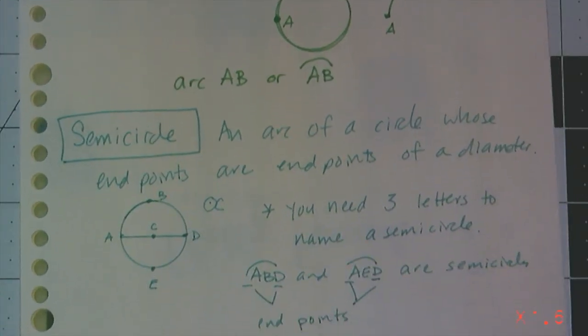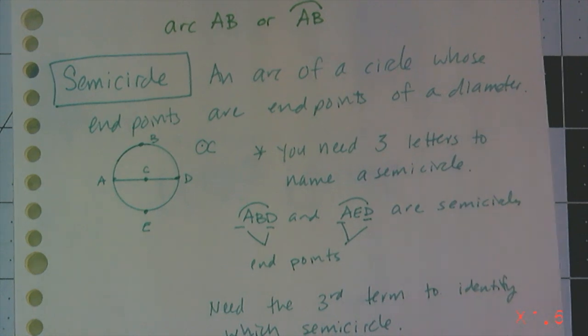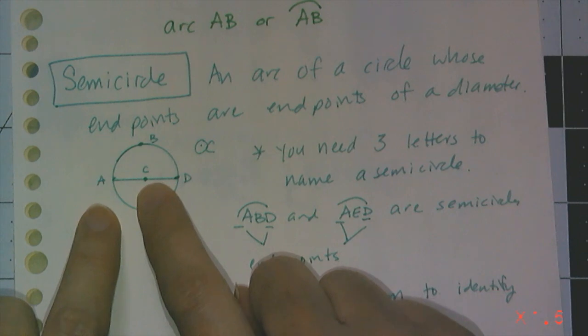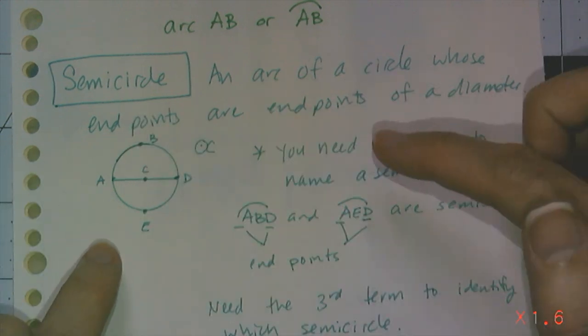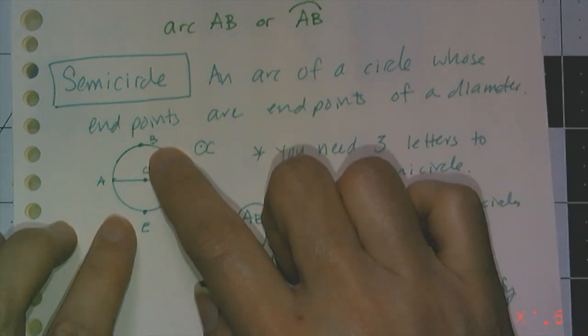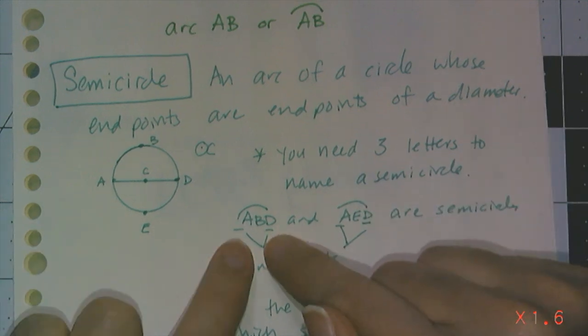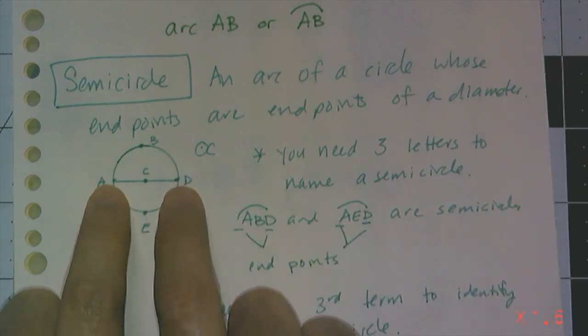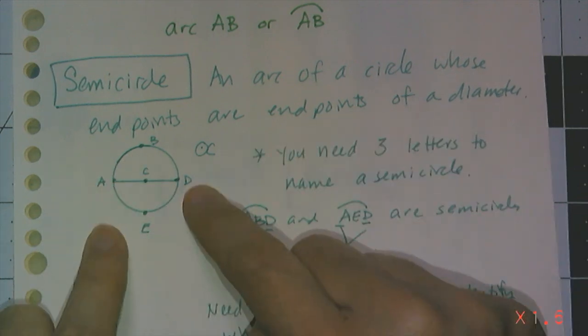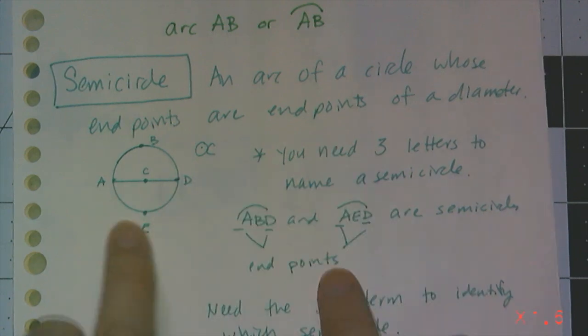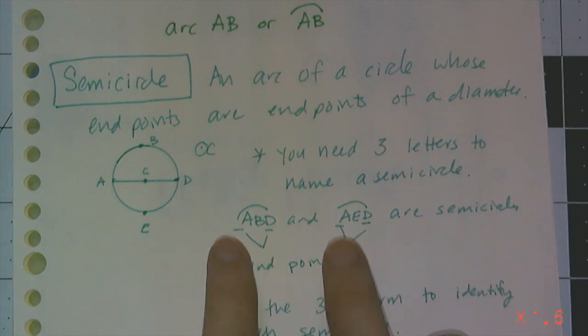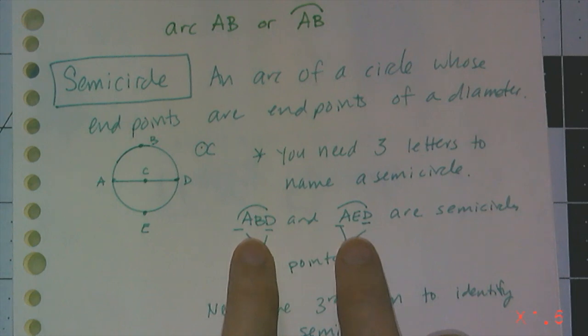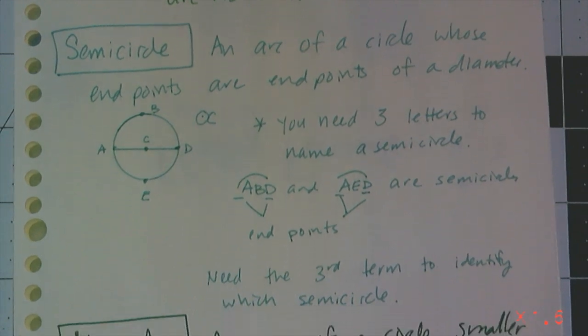Now semicircles are arcs of a circle whose endpoints happen to be a diameter of the circle. So circle C here has two semicircles, which is why I need to use three letters to name a semicircle. I don't know if I mean the top half or the bottom half, so it's not enough to just say the endpoints and have semicircle AD. I need three points. So ABD would tell everyone that I am talking about the semicircle at the top half, and AED would be telling everybody I mean the semicircle on the bottom. So the way I name semicircles, I need three letters. The endpoints have to be on the end of the name, and the extra point on the arc that designates which part of the arc I'm looking at has to be the middle letter.